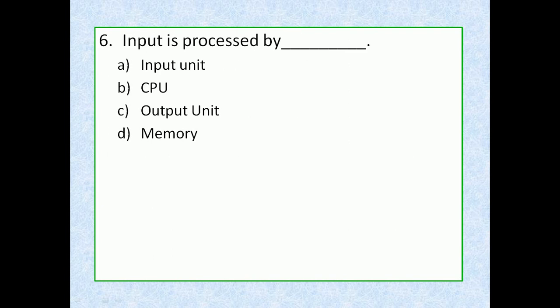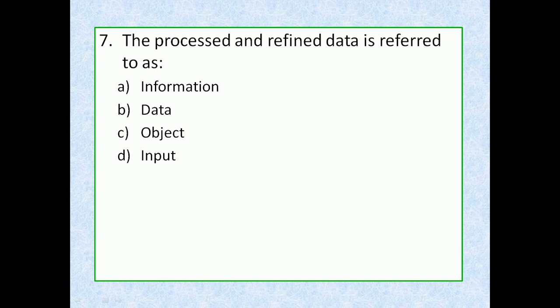Question 6: Input is processed by — option A: input unit, option B: CPU, option C: output unit, option D: memory. The correct answer is option B, CPU. The CPU is the part of a computer that processes input data. It is often referred to as the brain of the computer because it performs the arithmetic, logical, and control operations that allow the computer to function.